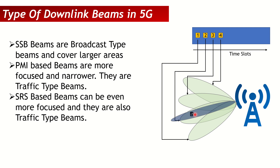SRS estimation is performed on the gNodeB side, where computational and processing power is much higher than on the UE side. So the gNodeB can compute a more optimal, narrower beam using SRS beam weights compared to PMI. The downside is that SRS is sent in uplink across the whole bandwidth, requiring a lot of uplink power. In poor radio conditions where uplink power is limited, SRS may not be practical since power is divided over the whole bandwidth. In poor radio conditions, PMI beams might be better.